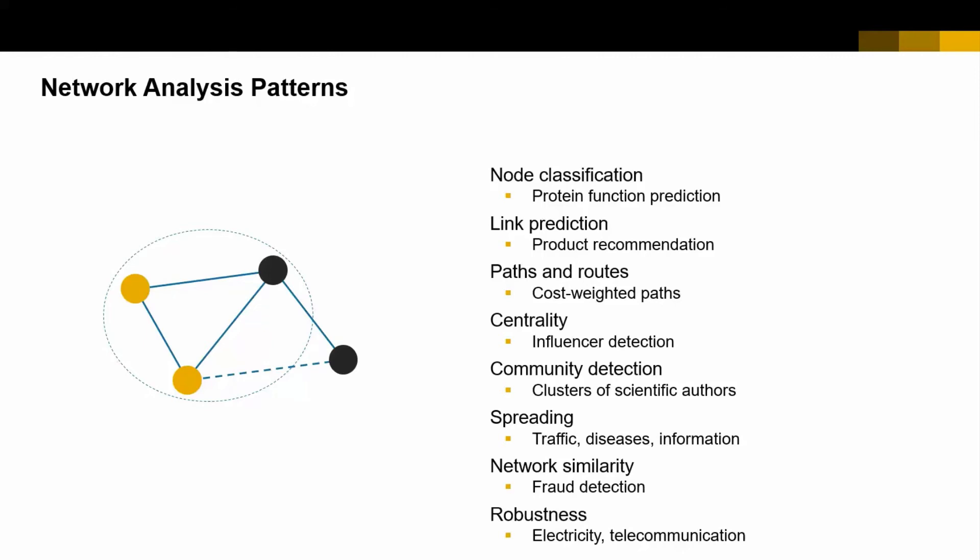Then there is the idea of identifying communities — for example in a social network — understanding sets or clusters of scientific authors who share the same interest or write very similar papers. And you also see approaches that let you understand how data or information spreads over a network — for example, how traffic spreads over a road network and how it might be impacted if you change the network, such as closing down a road, or how diseases spread in a community, or how information spreads in a communication network.